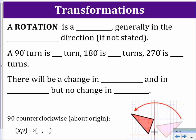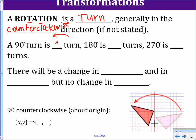A rotation is a turn — the word rotation has T's in it to help you remember 'turn.' If no direction is specified, the rotation is counterclockwise by default. Rotations are generally done in increments of 90 degrees: 90° is one turn, 180° is two turns, 270° is three turns, and 360° is four turns — though four turns is the same as zero turns. A rotation changes location and orientation, but not size.